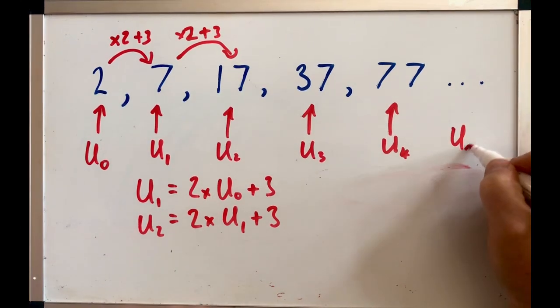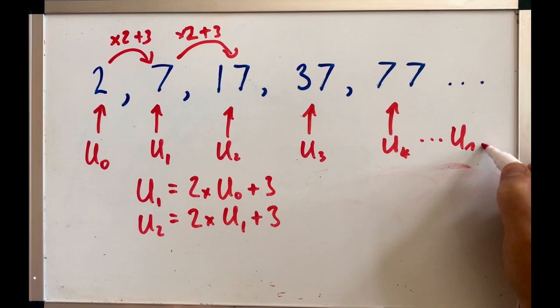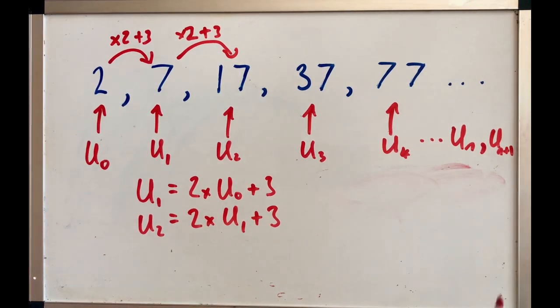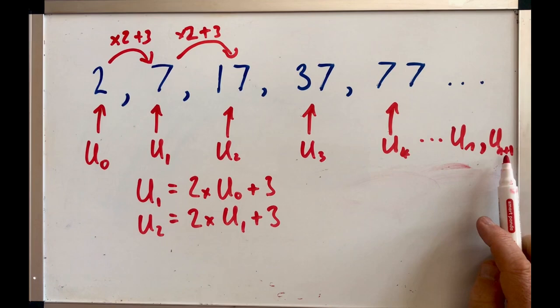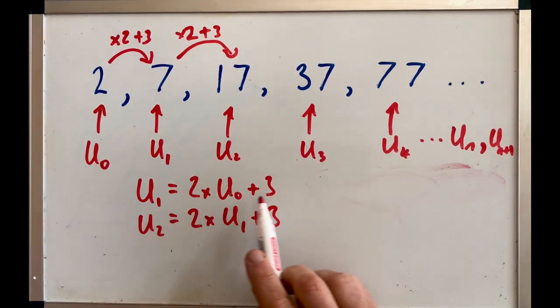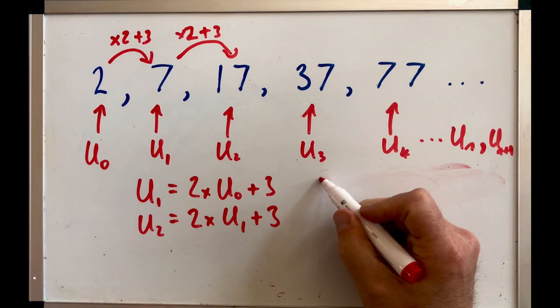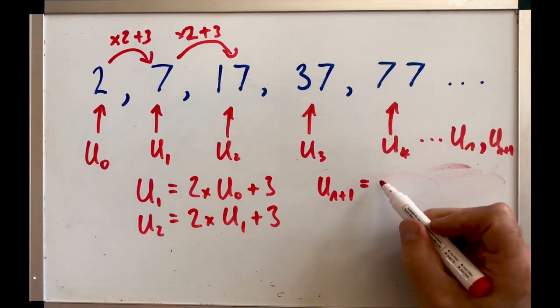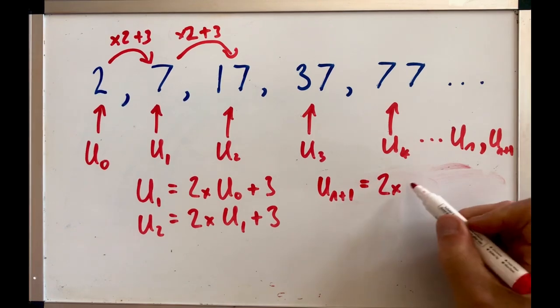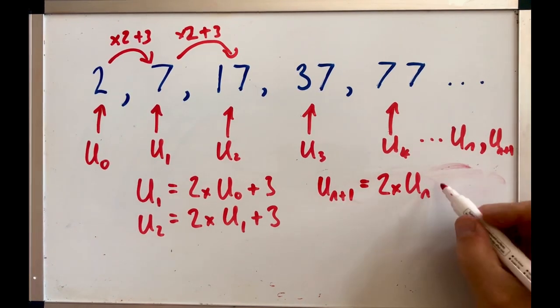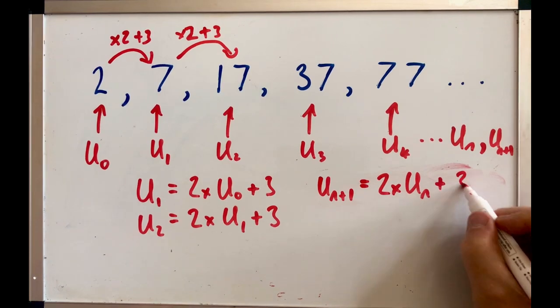U₁ and then the next term would be U₁ plus 1. So if that was 10, 10 plus 1 is 11 and so on. Now, to connect these two together using this, you'd say that the next term is equal to 2 times the term we have, which in this case was U₁, the term before it, plus 3.